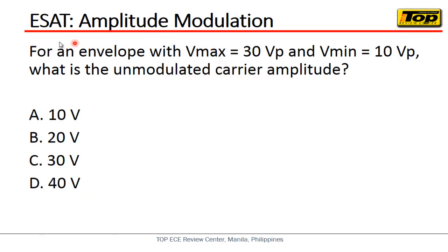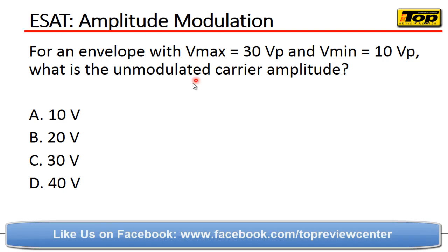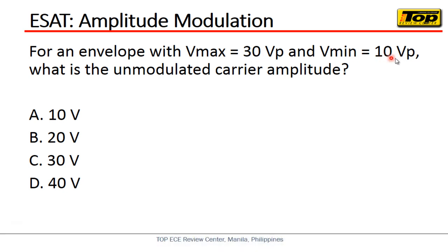For the ESSAT subject, the topic is amplitude modulation. The question is: for an envelope with Vmax of 30 volts peak and a minimum Vmin of 10 volts peak, what is the unmodulated carrier amplitude? The question is asking us for the unmodulated carrier amplitude. Given are Vmax and Vmin — 30 and 10 volts peak, respectively. I have prepared an illustration here.